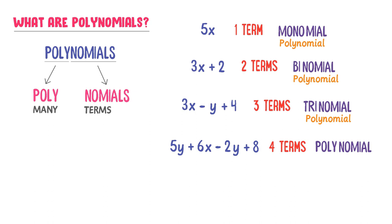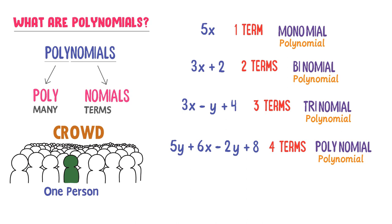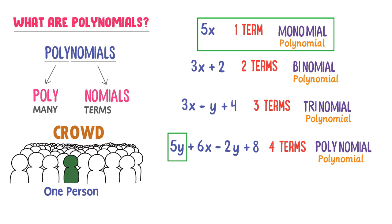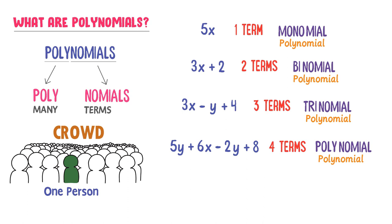Let me clear a common confusion: students say that monomial is not a polynomial — that is totally wrong. Monomial is a polynomial. To understand this, consider a crowd of people. If I take one person out of the crowd, that single person still belongs to those people. Similarly, a single term or monomial belongs to the crowd of polynomials because it is taken from that crowd. So remember: monomial, binomial, trinomial, and polynomial are all polynomials.